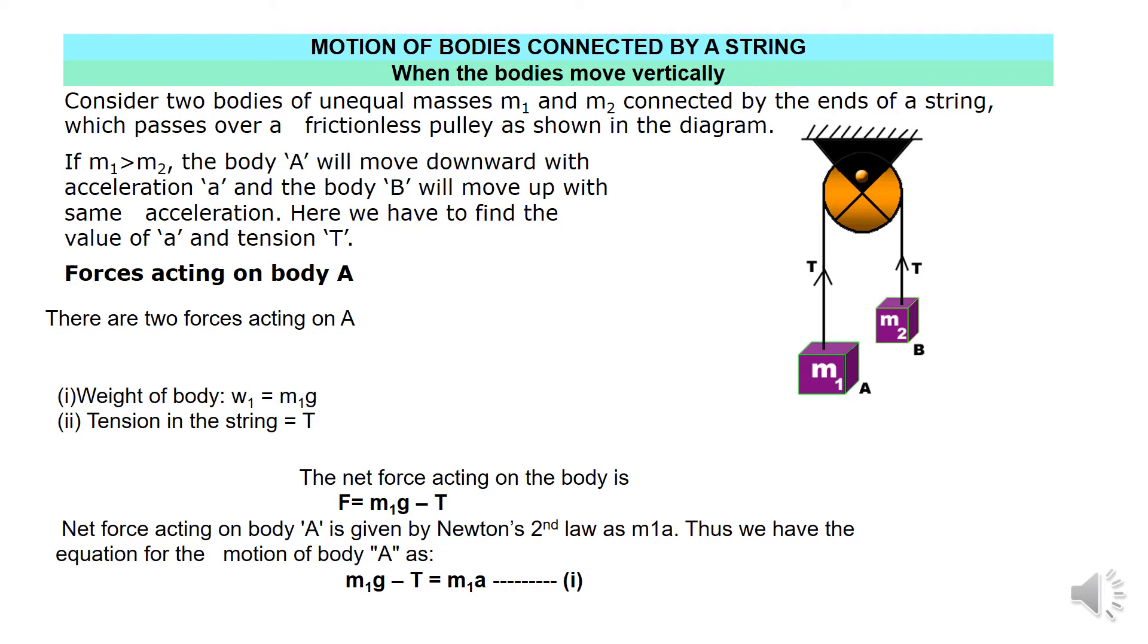So when W is equal to MG, we can say that F is equal to MG minus T. T is the tension as I said earlier.